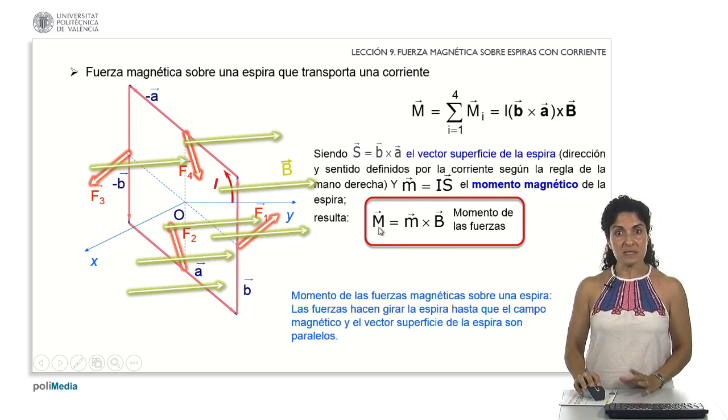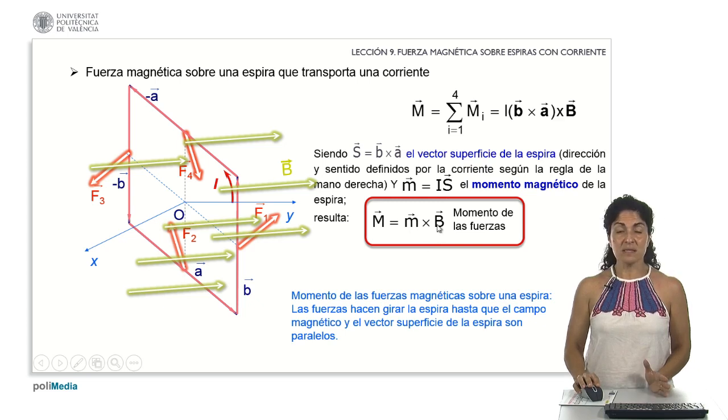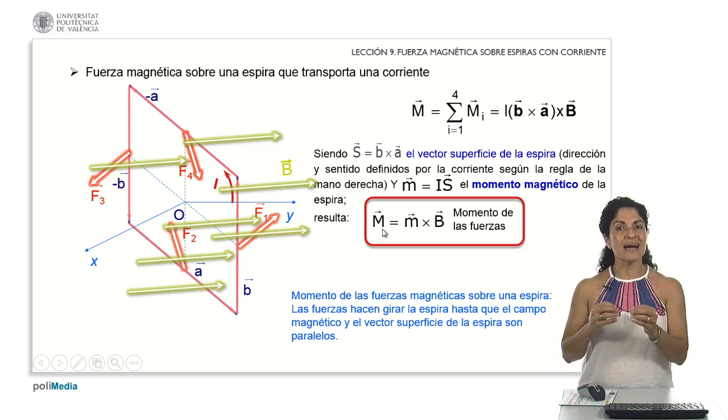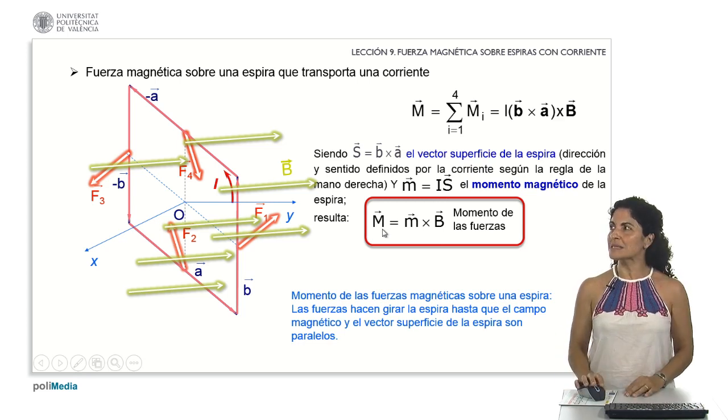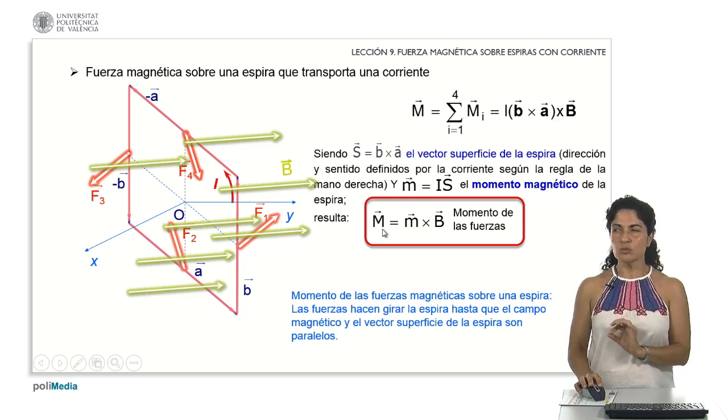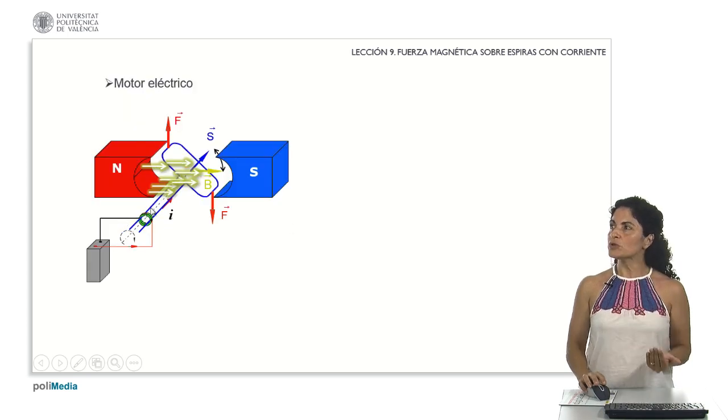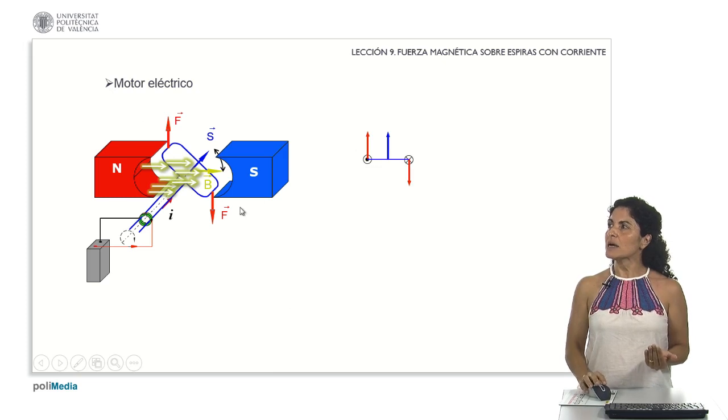The total moment of forces can be expressed using the magnetic moment, defined as the product of the magnetic moment and the magnetic field vector. What occurs in this scenario? From this definition, it becomes evident that the rotation of the loop halts precisely when the magnetic moment and the magnetic field moment vectors align parallelly. At this point, the sign becomes zero, resulting in no moment of forces, thus no rotation.